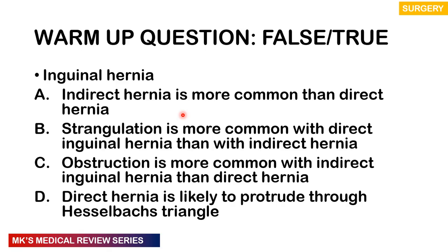Here's a warm-up question — a true or false question. Inguinal hernias: A) indirect hernia is more common than direct hernia. B) strangulation is more common with direct inguinal hernias than with indirect hernias. C) obstruction is more common with indirect inguinal hernias than direct hernias. D) direct hernia is likely to protrude through Hesselbach's triangle.